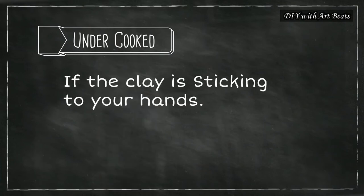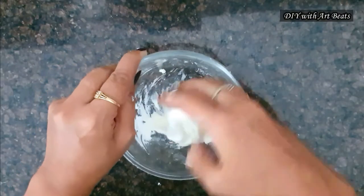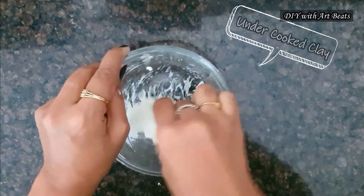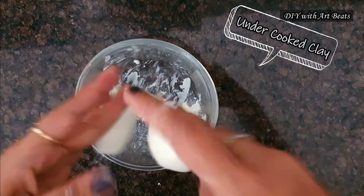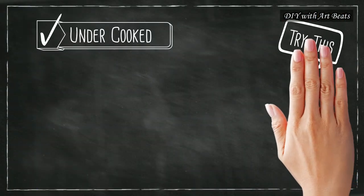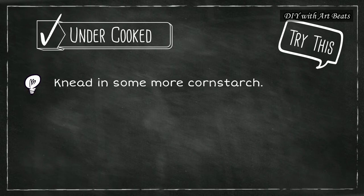And if your clay is undercooked then it will be sticky like this. It will stick to your hands and to the surface also. You can try to fix this undercooked clay by mixing some more cornstarch in this or you can cook it again for a few more seconds.